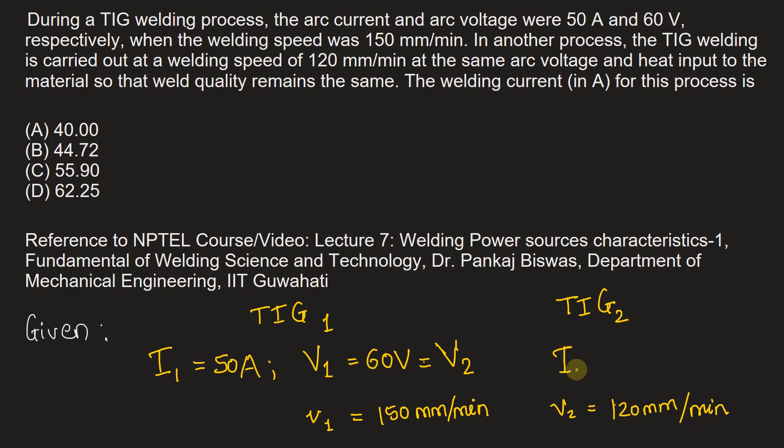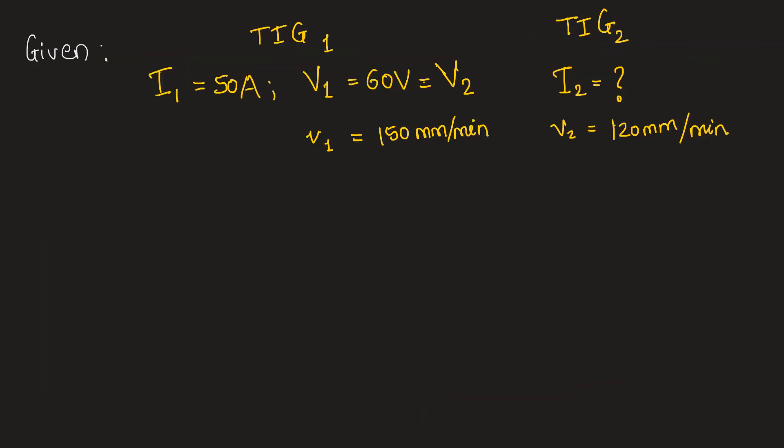We need to find out the welding current in the second process. Since heat input remains the same in both conditions and we are using welding speed, we will use the heat input per unit length: q₁ for the first process equals q₂ for the second process.